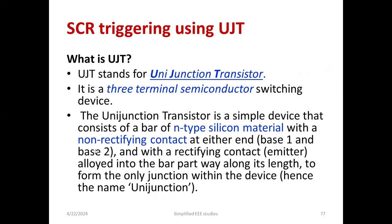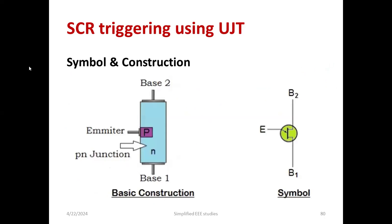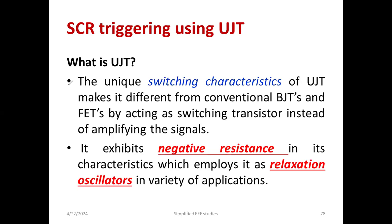These are the three important points related to UJT. We have two base terminals, B1 and B2, but junction-wise, we have only the emitter terminal — this forms one junction. As you can see in the structure, we have base 1, base 2, and the emitter. Regarding the features of UJT, it shows specific characteristics of switching action. It has special switching characteristics that make it entirely different from the bipolar junction transistor and the field effect transistor. It is a special type of transistor.